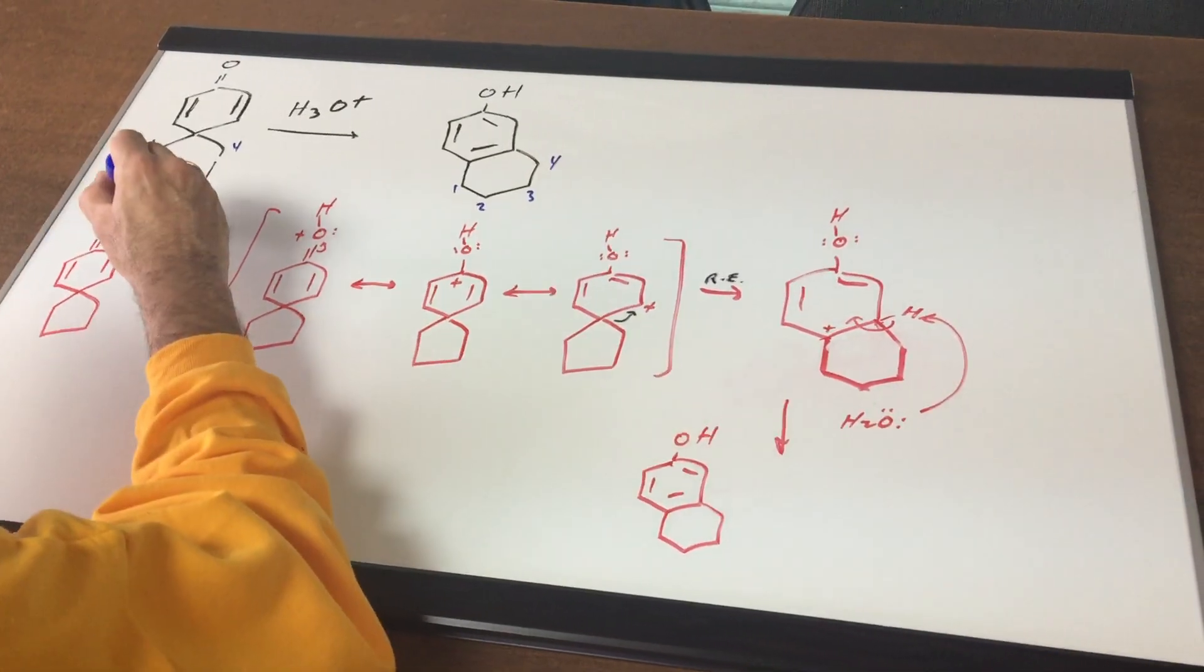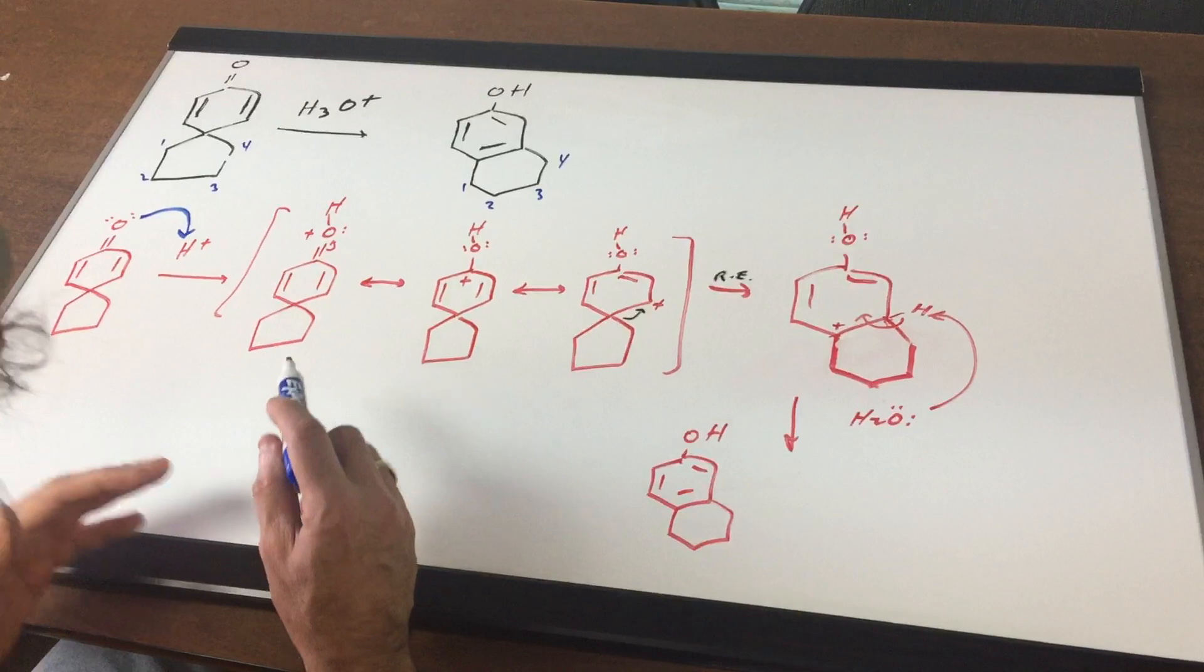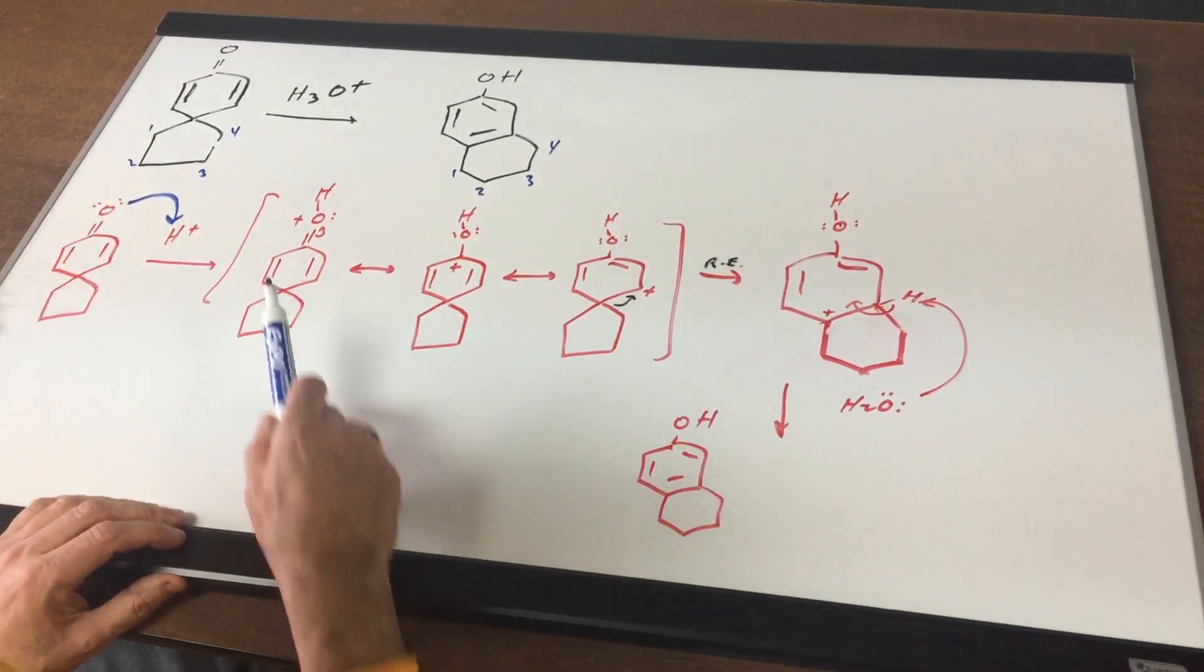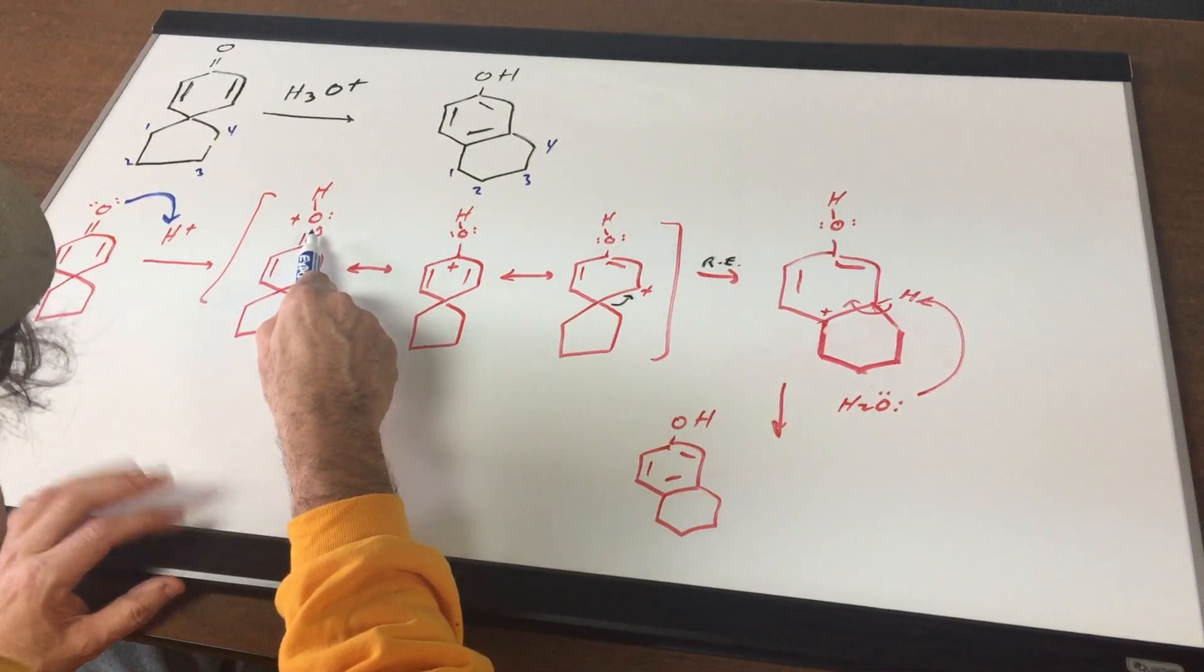Notice in the very first step what I'm gonna do is I'm going to pick up an H, meaning I'm gonna protonate the carbonyl group. Now once I protonate the carbonyl group as you can see I'm gonna be able to draw some resonance structures.